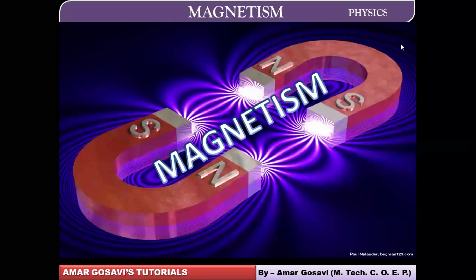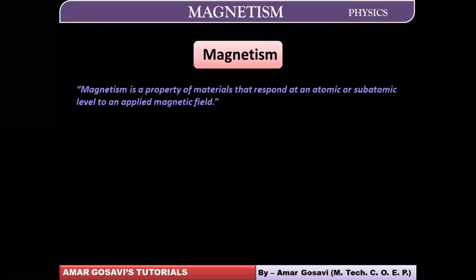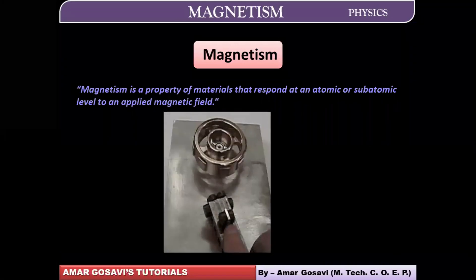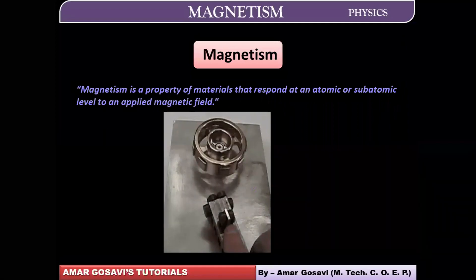Let's discuss the origin of magnetism. We all know magnetism is a property of material that responds at the atomic or subatomic level to an applied magnetic field. Now let's understand how this magnetism comes into picture so far as the materials are concerned.